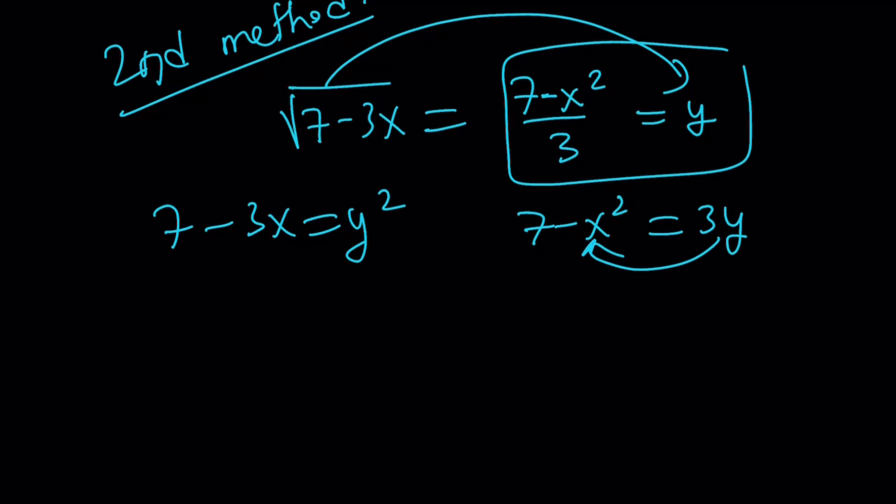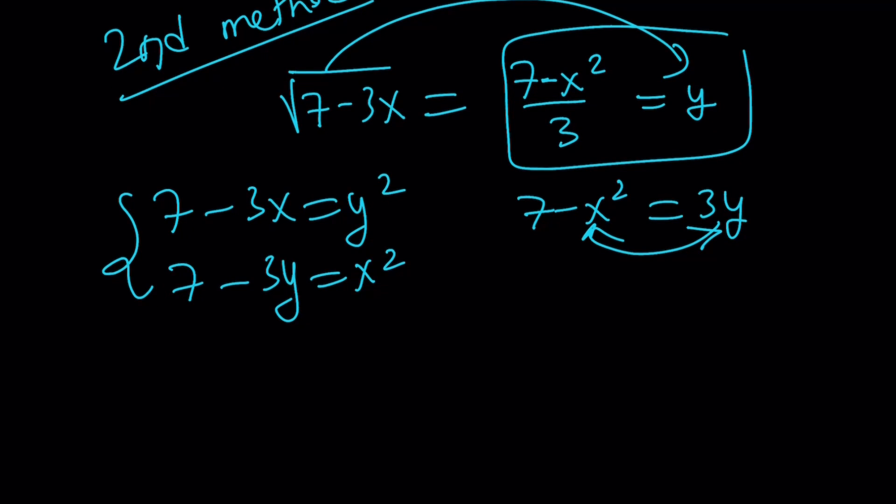Switch these around because they're going to be minus and plus. You get 7 minus 3y equals x squared. And guess what? You got a lovely, beautiful, awesome system. I know some people don't like these adjectives, but I'm sorry about that. I like them. I hope you don't mind.